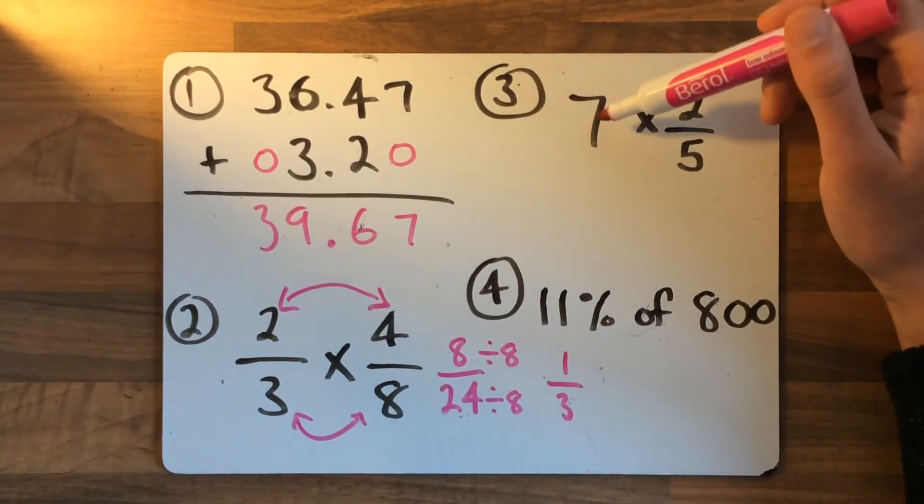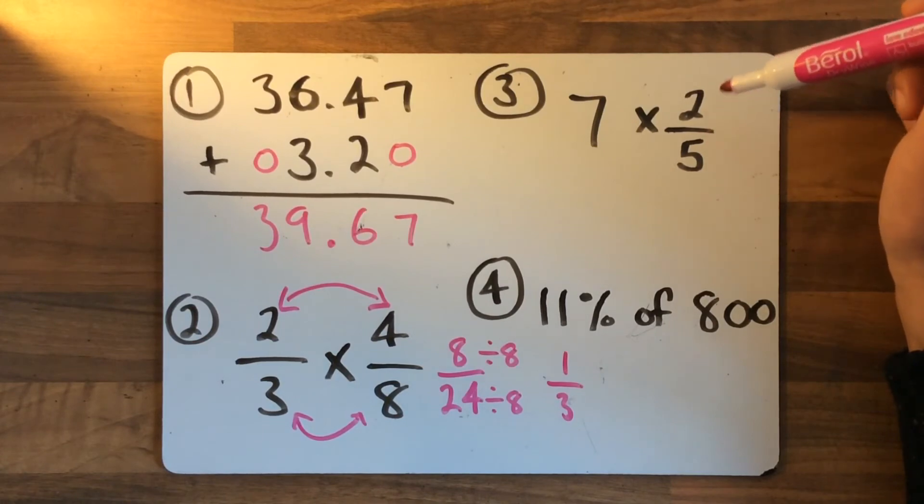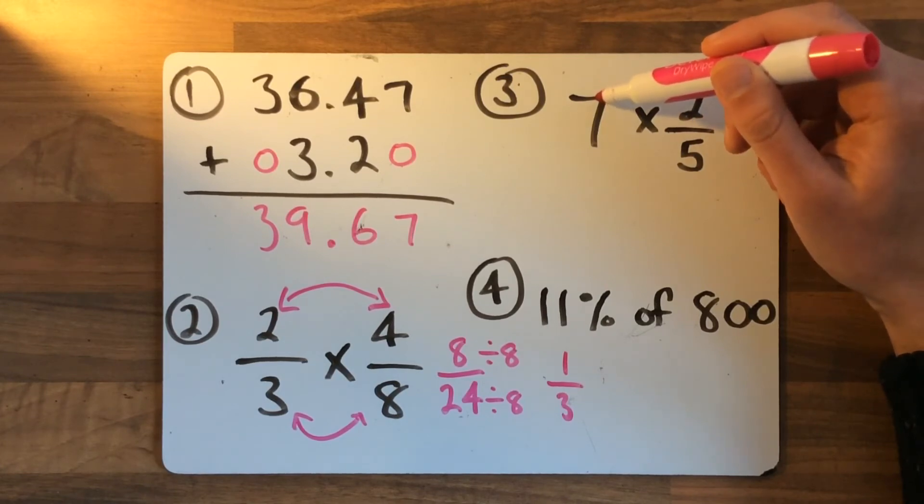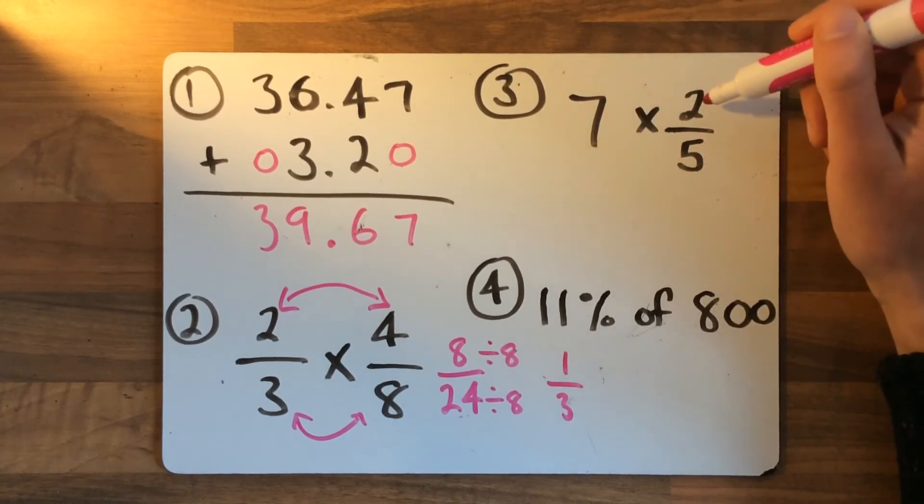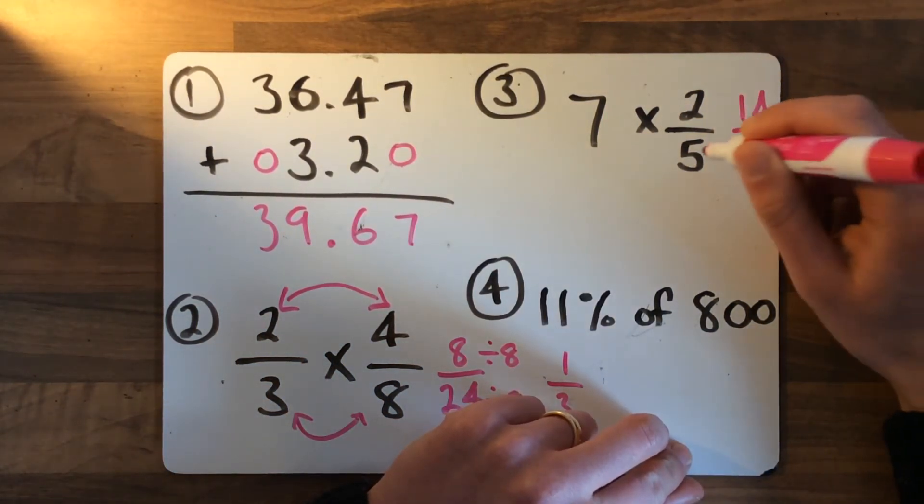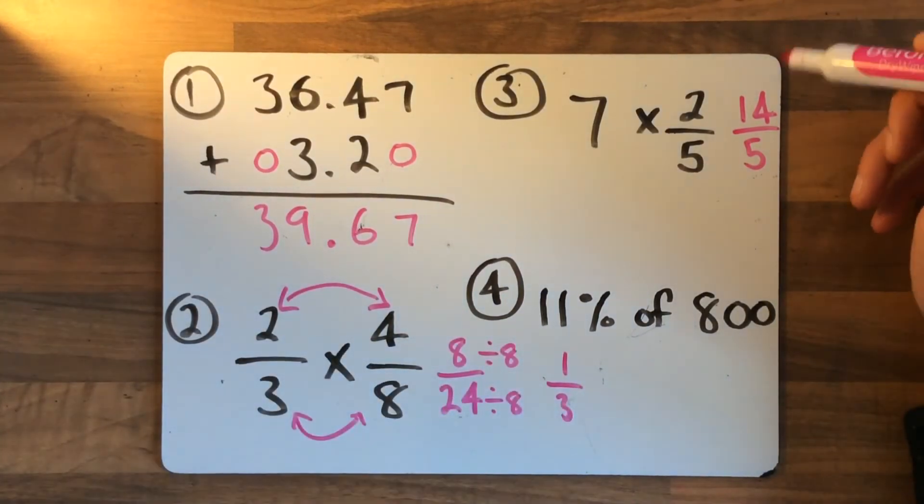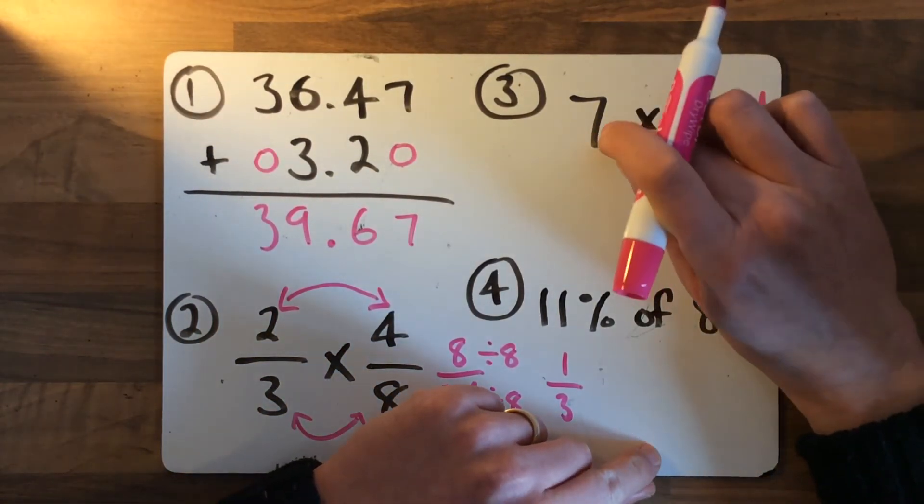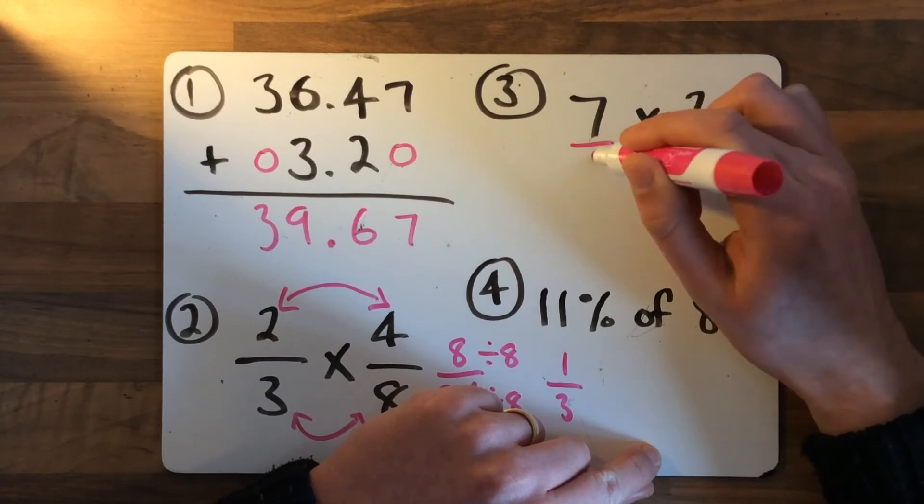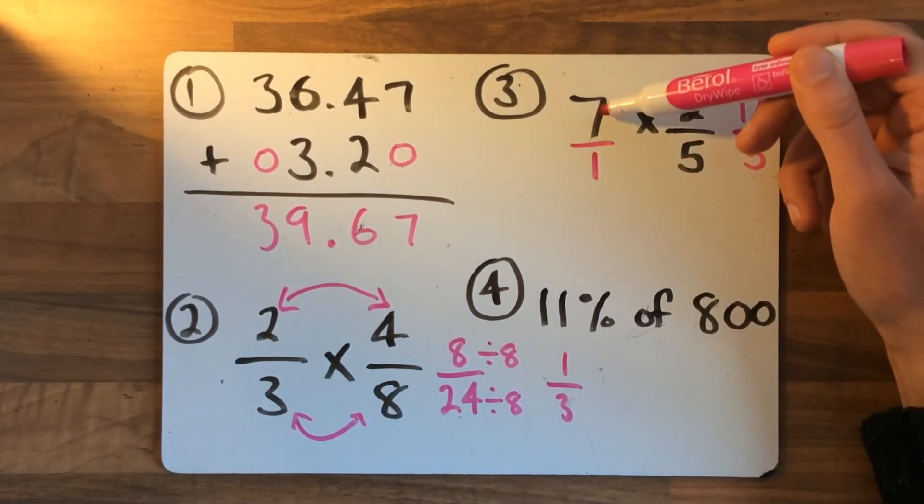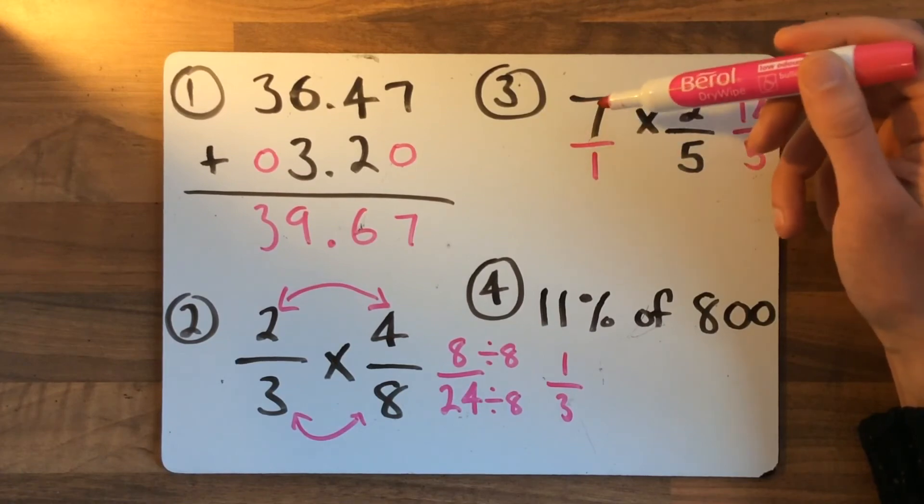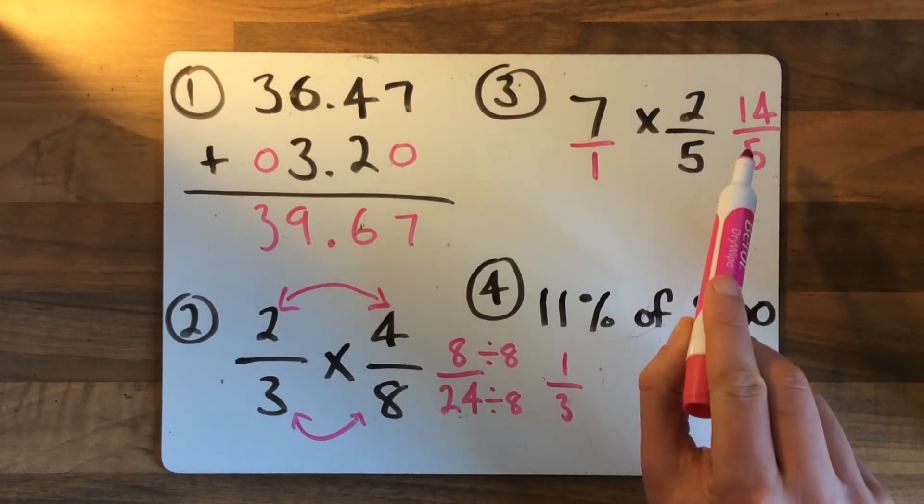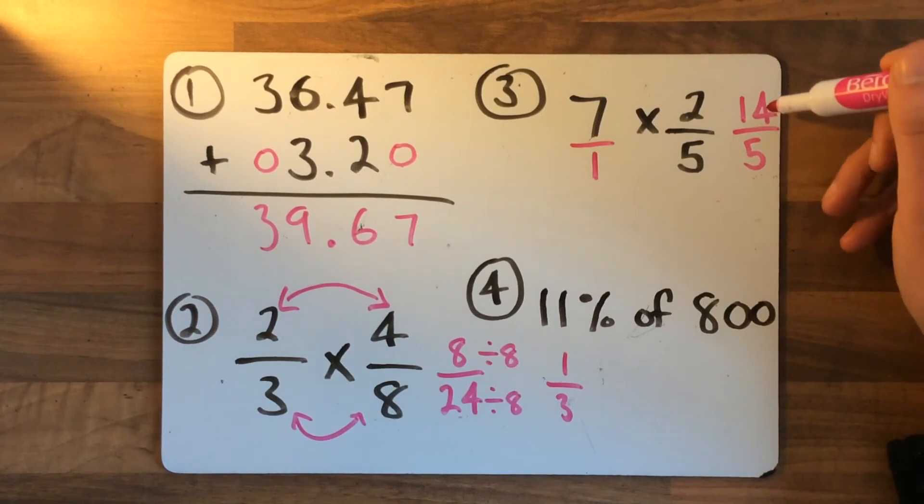Moving on to number 3: 7, a whole number or an integer, multiplied by 2 fifths. What we could do at this point is multiply the whole number by the numerator. 7 times 2 gets us to 14, and then the denominator stays the same. If you put 14 over 5 as your answer, that's great. We're going to simplify it in a moment. Another thing we could have done is turn this 7 into an improper fraction - 7 over 1, which is exactly the same as 7. Then we could have just done exactly what we did for question 2, multiplying the numerators and multiplying the denominators. We looked at 2 methods to do this. So we've got 14 over 5.